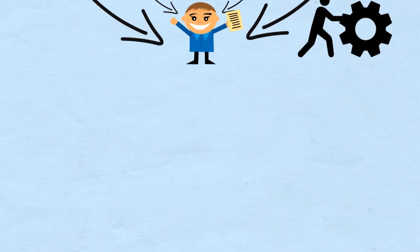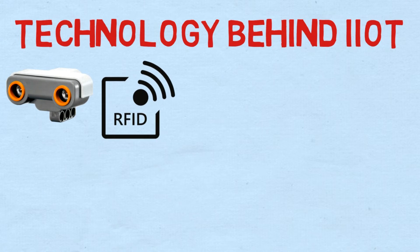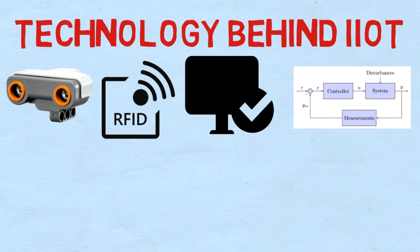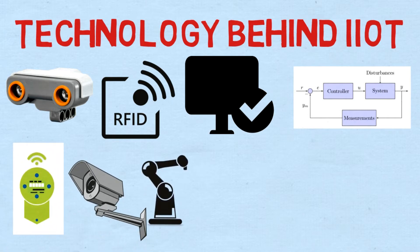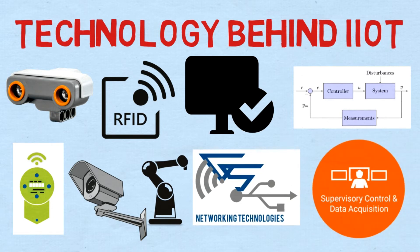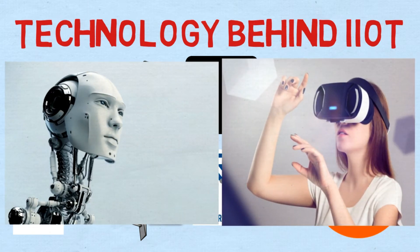What is the technology behind IoT? Hardware components of IIoT include sensors, radio frequency identification, condition monitoring, distributed control systems, smart meters, camera systems, industrial robotics, networking technologies, supervisory control and data acquisition systems, and much more. Artificial intelligence and virtual and augmented reality are also fields of IoT where something exciting is happening.